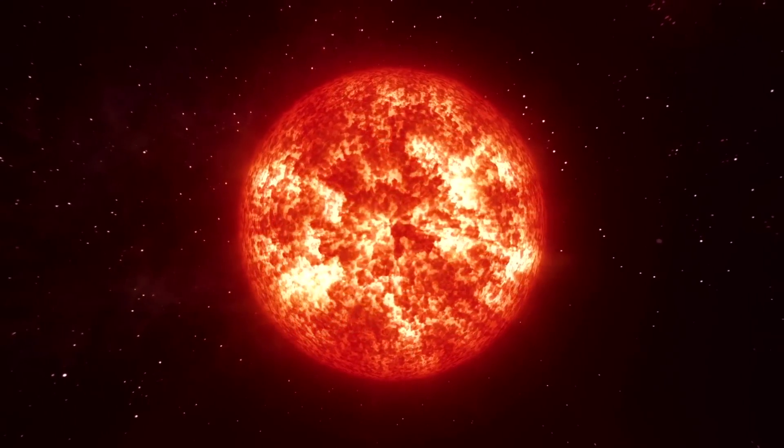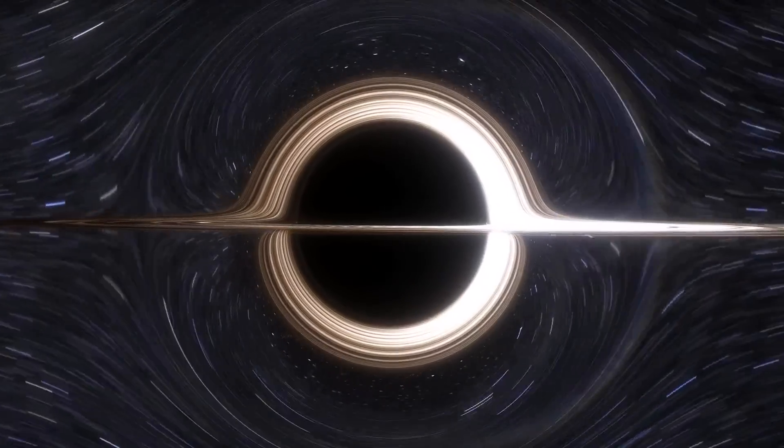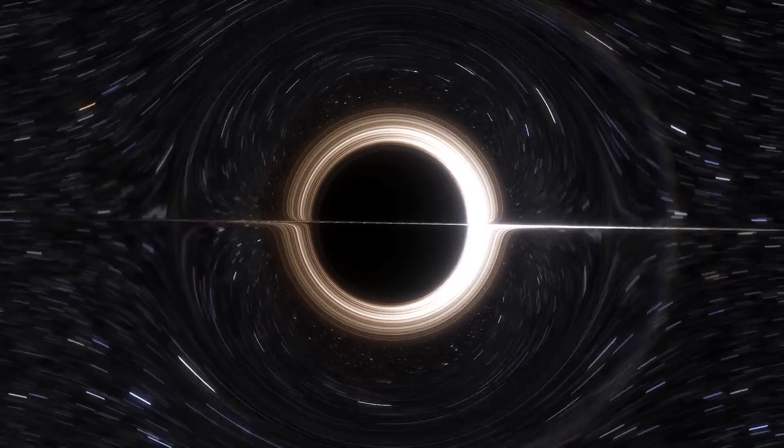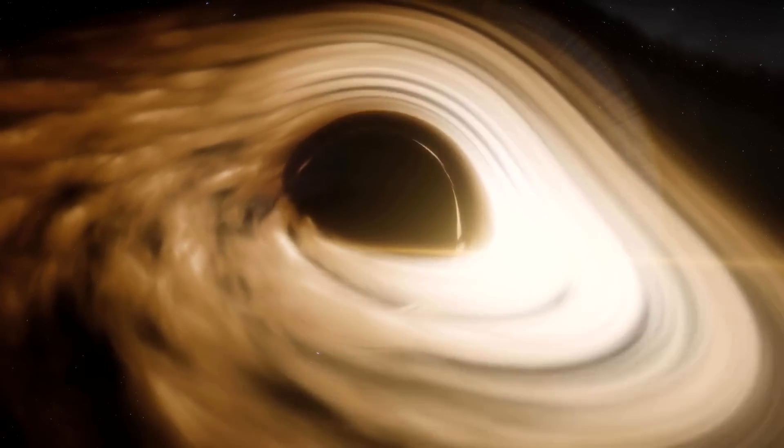So, how do we study something we can't see? Well, while we can't see black holes themselves, we can observe their effects on the space around them. For example, black holes can pull in gas and dust, forming a hot, glowing disk around them.